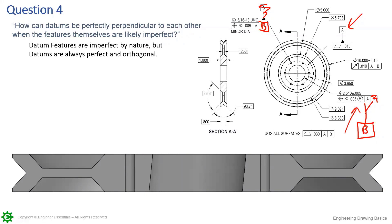If we're saying this feature here is at some sort of angle, which it will be, nothing's perfect, how do we make sure that the datum created by that is always orthogonal to the datum created by A? Our features are imperfect to each other.